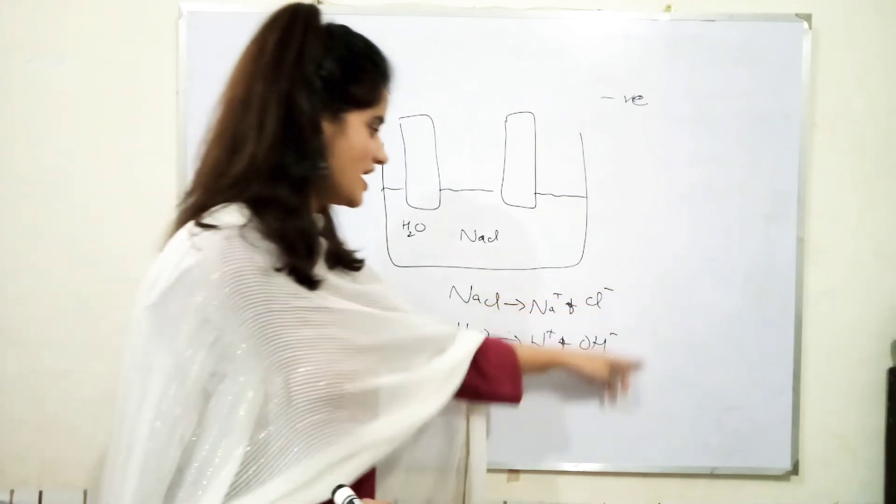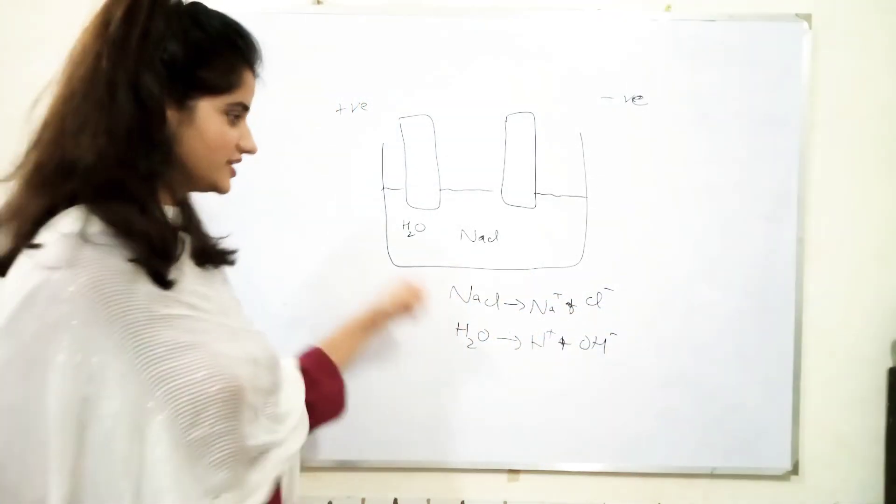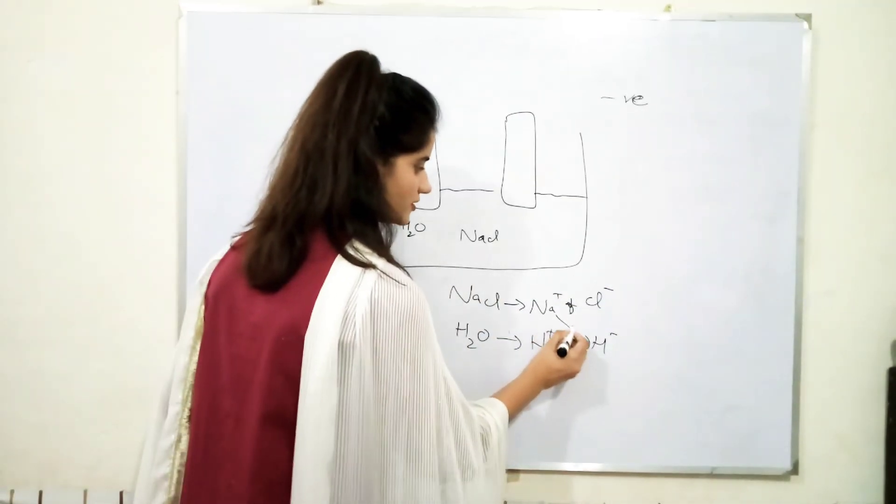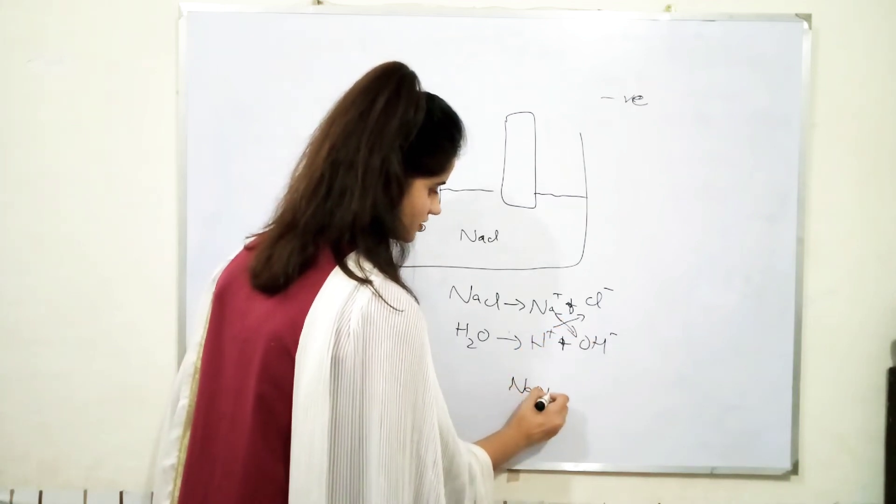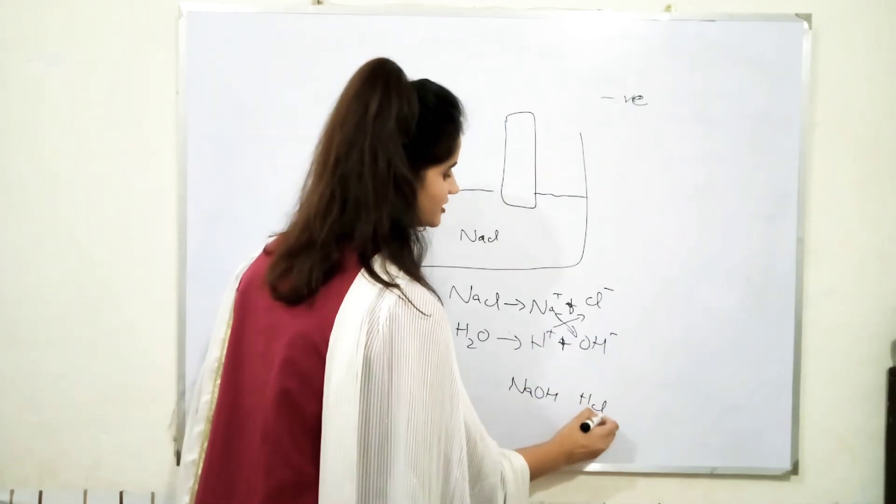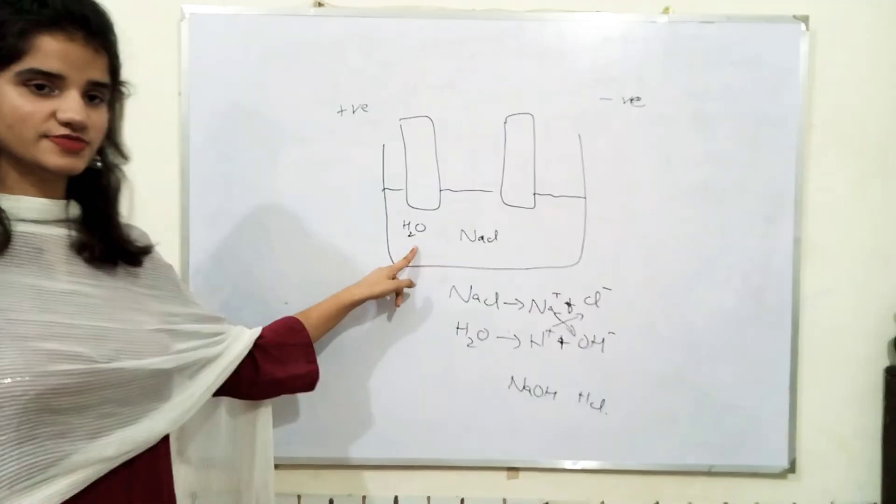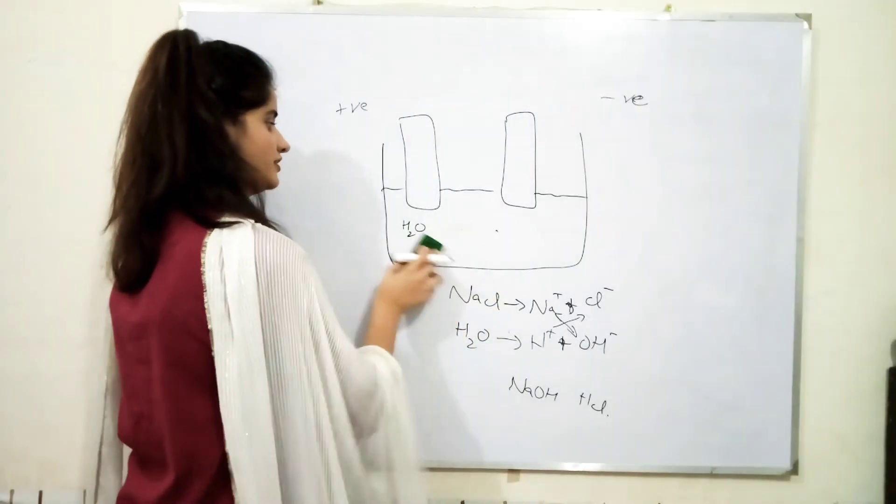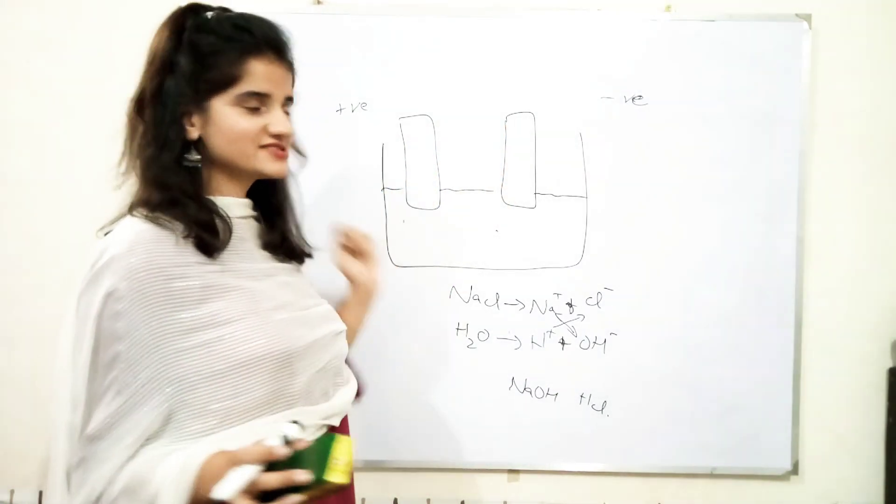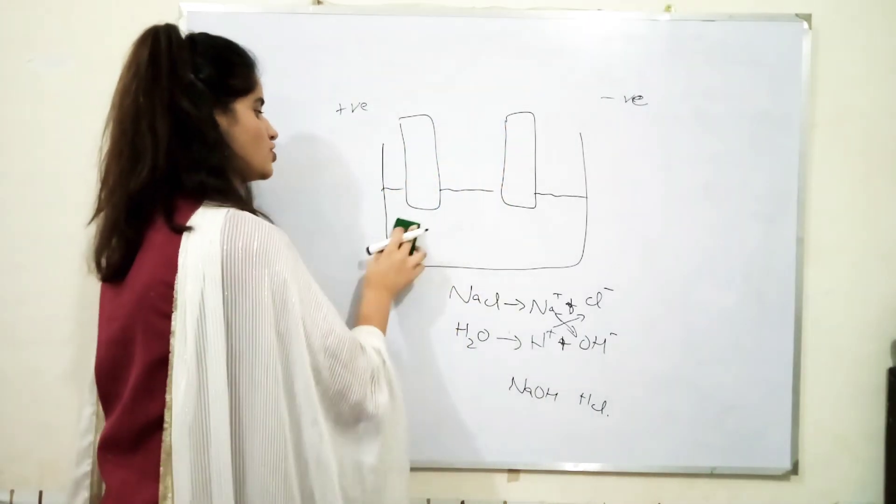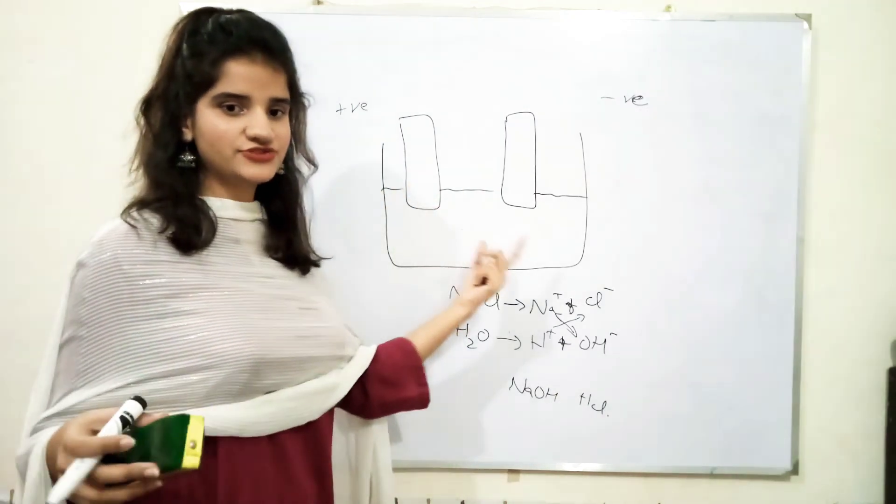Now, when these four ions are present together, technically what should be formed? NaOH and HCl. It should be formed technically, but here these are not formed. Why they are not formed here? Because the electrodes which are present inside, they would be having more forces for attracting them.